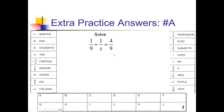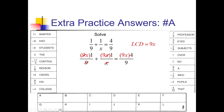My LCD for problem A is 9x — I have a 9 and also an x to cover that denominator. So multiplying each term by 9x: the 9s cancel in the first fraction, the x's cancel in the second, and the 9s cancel in the last fraction. Cleaning up: x plus 9 equals 4x. Subtract x from both sides to get 3x, divide by 3, and x equals 3. That doesn't give 0 in any denominator, so 3 is our answer. Looking that up gives us the word 'the' for box A.